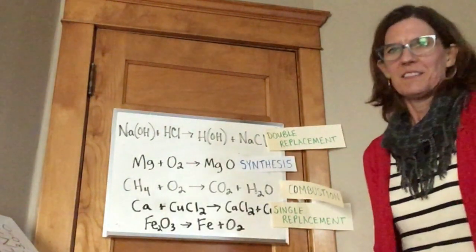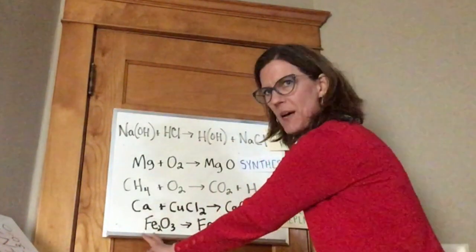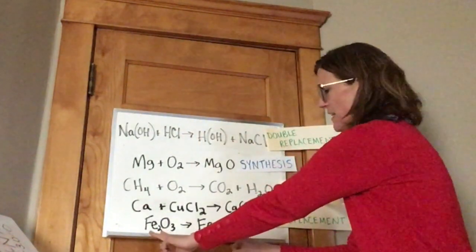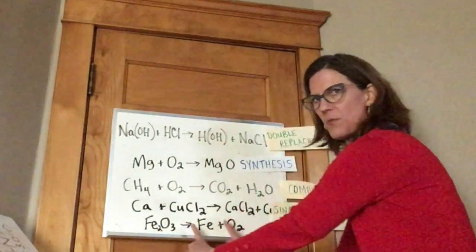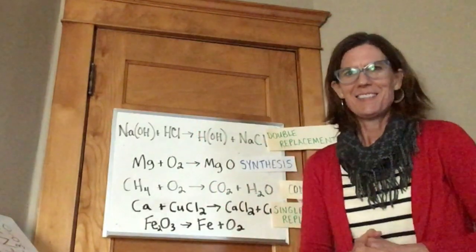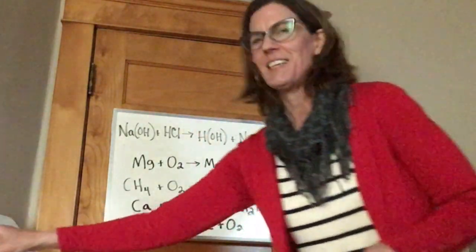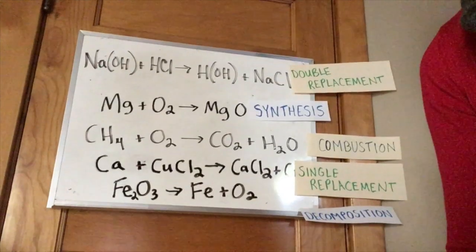All right. How about this last one? Use the fingers if you need to. Look at the reactants. There's no plus sign. It's just one compound, two capital letters, so it's a compound. And on the product side, it's two elements. So one compound, breaking up, decomposing into two elements. Compound, breaking up. If you said decomposition, you got it.